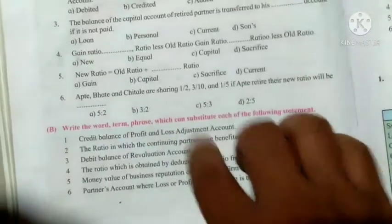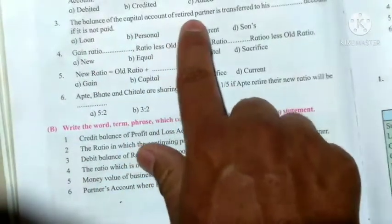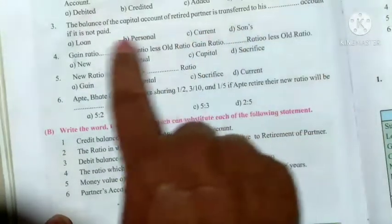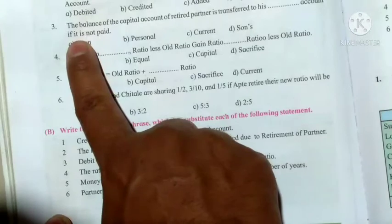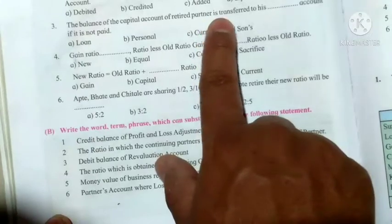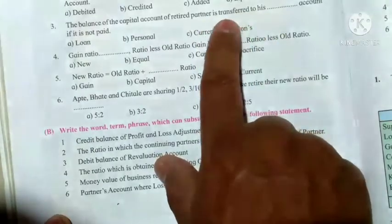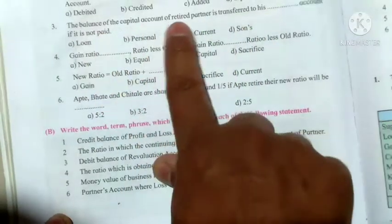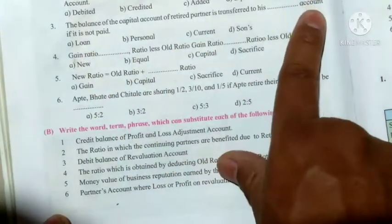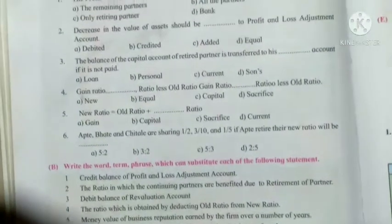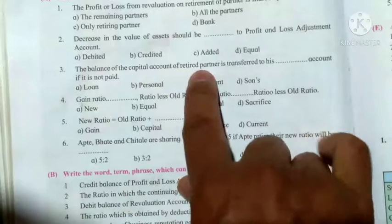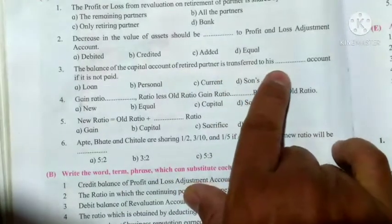Question 3: the balance of the capital account of the retired partner is transferred to his loan account if it is not paid immediately. The balance of the capital account of the retired partner is transferred to his loan account.